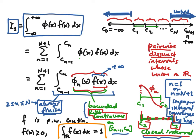Those two end pieces where the interval of integration is unbounded and the function f may also be unbounded — those we need to handle separately. But they're still convergent, because the hypothesis is that this integral is convergent overall.